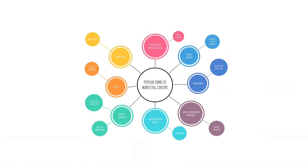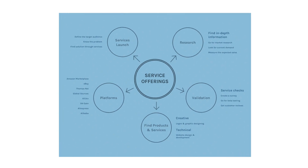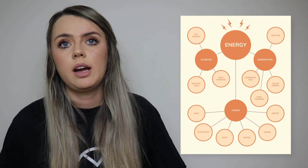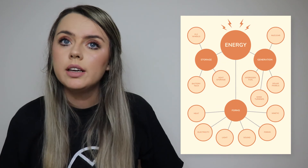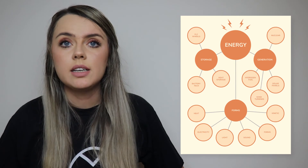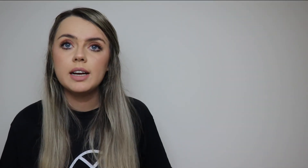In this bubble mind map template, the thing to be described is marketing content. The first set of nodes are forms of marketing content such as webinars and white papers, and the second set explains the use case or popularity level of each. More complex bubble maps rely on visual cues to stay organized — create a visual hierarchy by doubling up on key connecting lines. For example, in a bubble concept map template, supporting ideas connect to the central idea with double lines, while ideas that branch off from them use single lines.